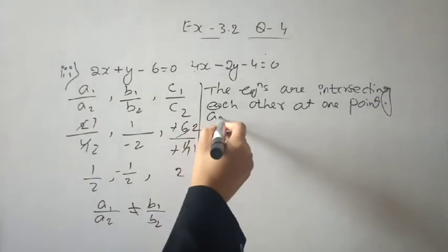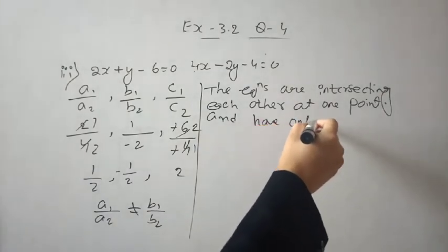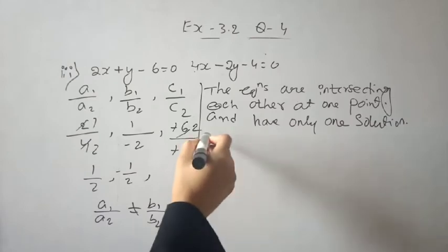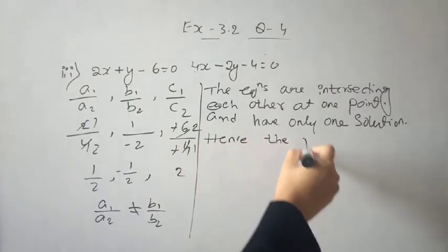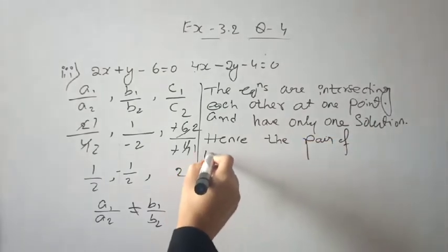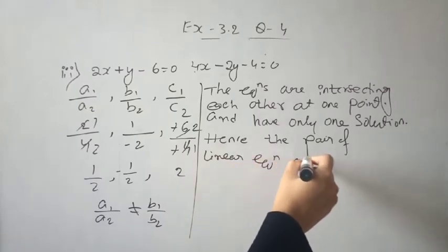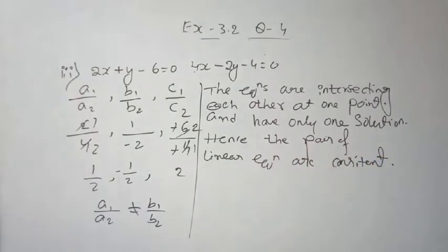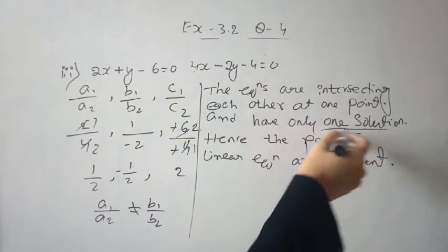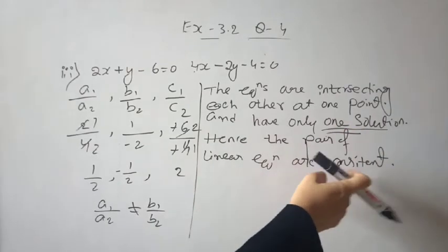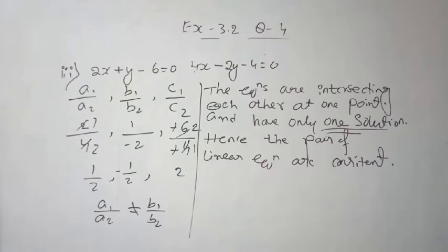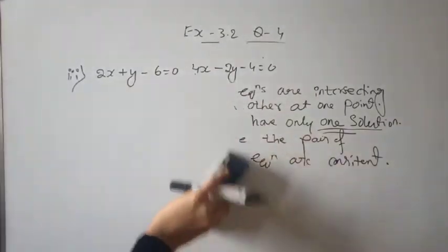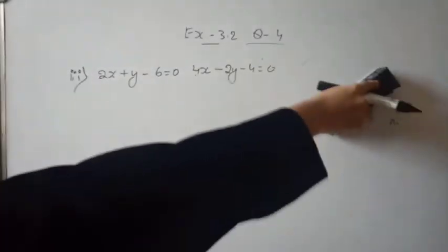It has only one solution because the lines are intersecting at one point. When lines intersect at one point, there is exactly one solution. Therefore the given pair of linear equations is consistent. One solution means consistent, more than one means infinite solutions also consistent, and no solution means inconsistent.